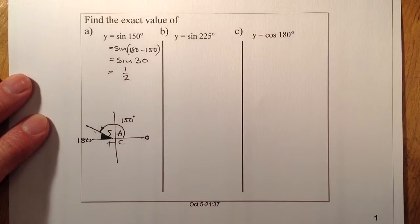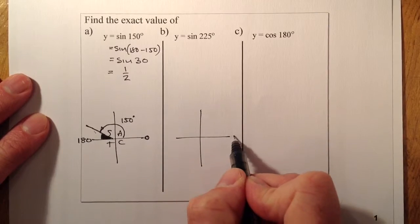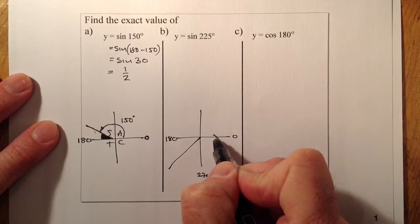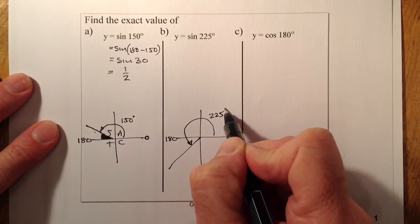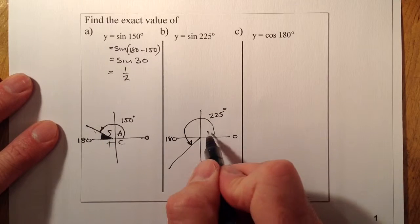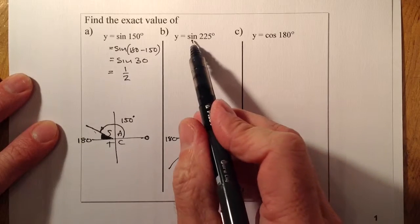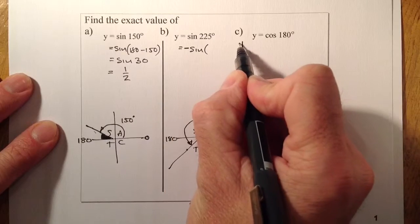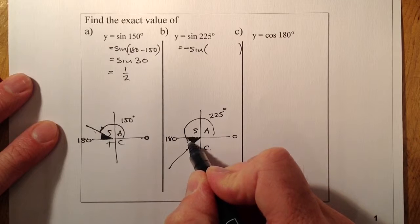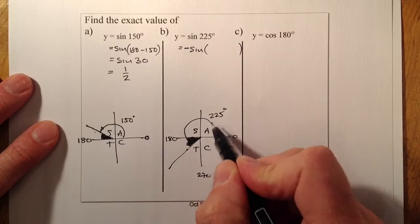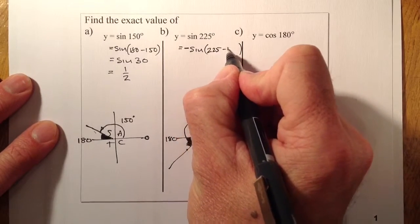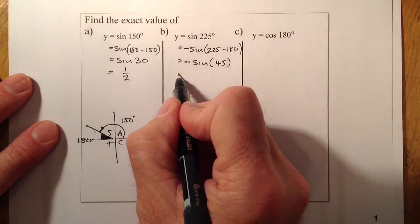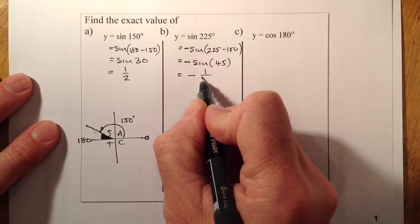Next, sine 225. Drawing the CAST diagram: 0 is here, 180 here, 270 here. So 225 lies in the third quadrant. Sine is negative in that quadrant. The acute angle is found by taking 225 minus 180, giving 45 degrees. So the answer is minus sine of 45, which equals negative 1 over root 2 from the table of exact values.